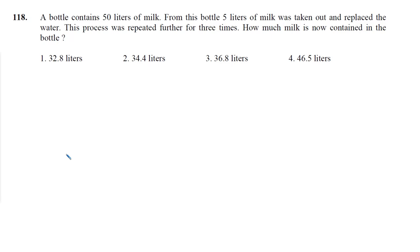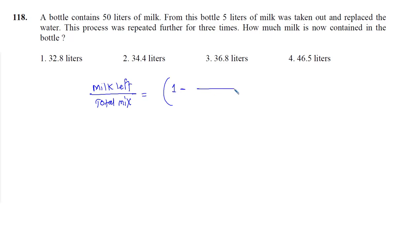We have a direct formula for this. Whenever the initial mixture is pure and we remove some quantity and replace it with water, in every operation we are removing a fixed quantity of 5 liters. The formula is: milk left divided by total mixture equals (1 minus x divided by total mixture) to the power of the number of times the operation is performed, where x is the quantity removed in each operation.